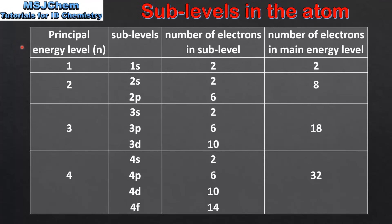Finally we look at the principal energy level, the number of sublevels, the number of electrons in each sublevel, and the number of electrons in each main energy level. In N equals 1, the 1s sublevel can hold 2 electrons, giving a total of 2 electrons in N equals 1. In N equals 2, the 2s sublevel can hold 2 electrons and the 2p sublevel can hold 6 electrons, giving a maximum of 8 electrons in N equals 2. In N equals 3, the 3s sublevel holds 2, the 3p holds 6, and the 3d holds 10 electrons, giving a maximum of 18 electrons in N equals 3.